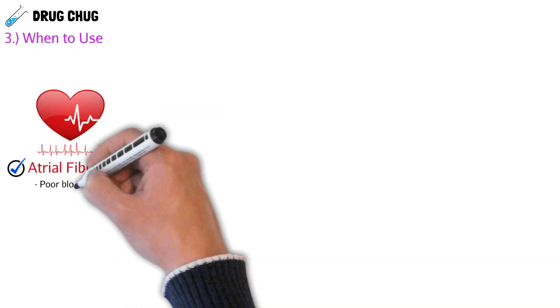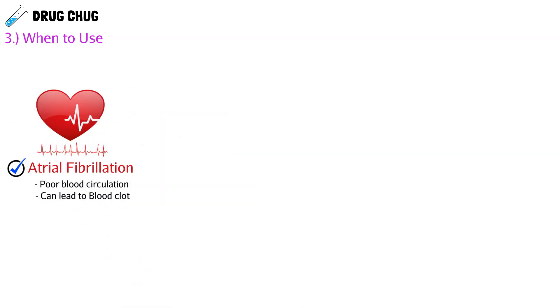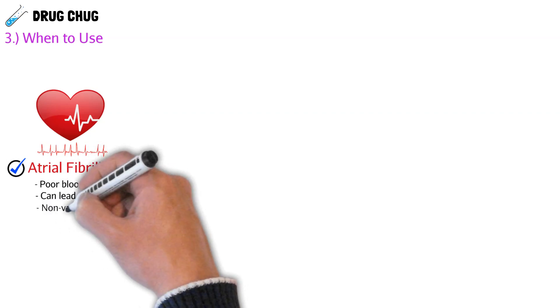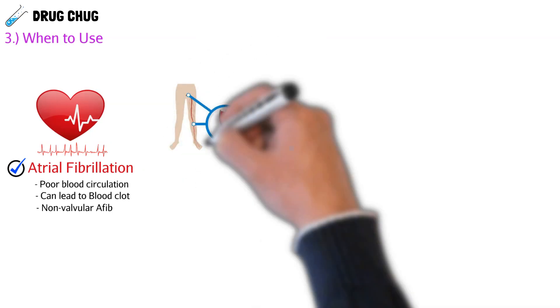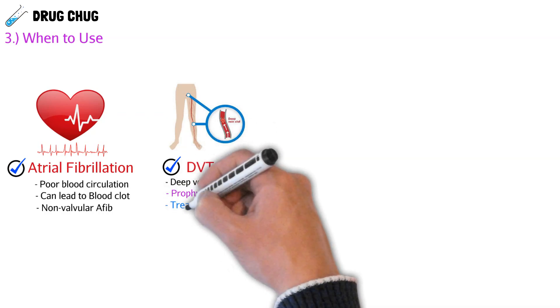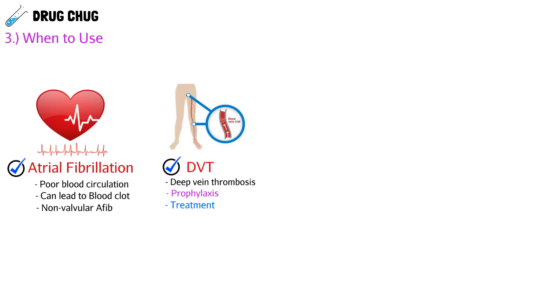Now that we know how direct thrombin inhibitors work, let's talk about when we actually use them. If a patient has atrial fibrillation — meaning the atria aren't pumping correctly — this can lead to poor blood circulation and blood clot formation. This is specifically for non-valvular afib; if a patient has a prosthetic valve, we can't use dabigatran and would need warfarin instead. We can also use it for deep vein thrombosis, either as prophylaxis for patients at risk or as treatment for patients who currently have a DVT.